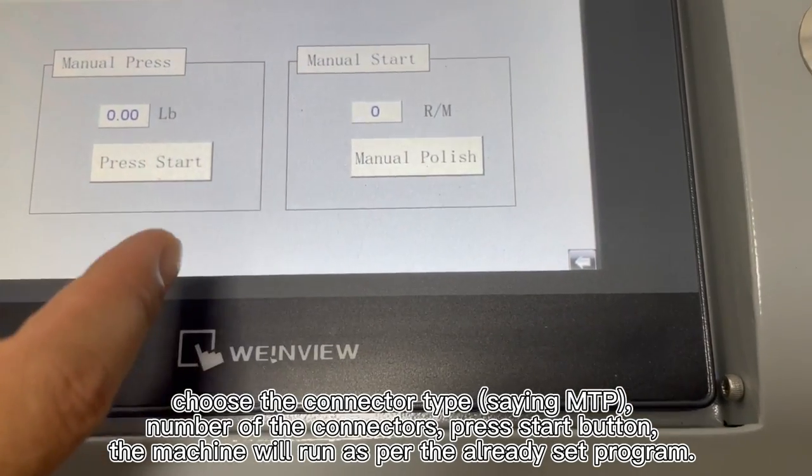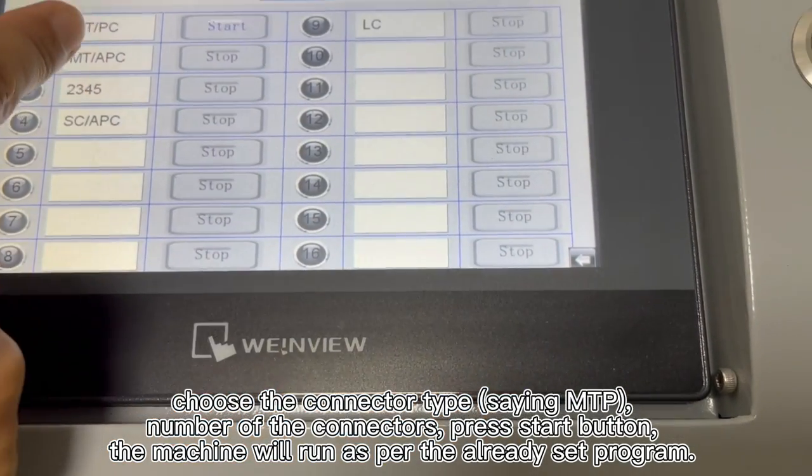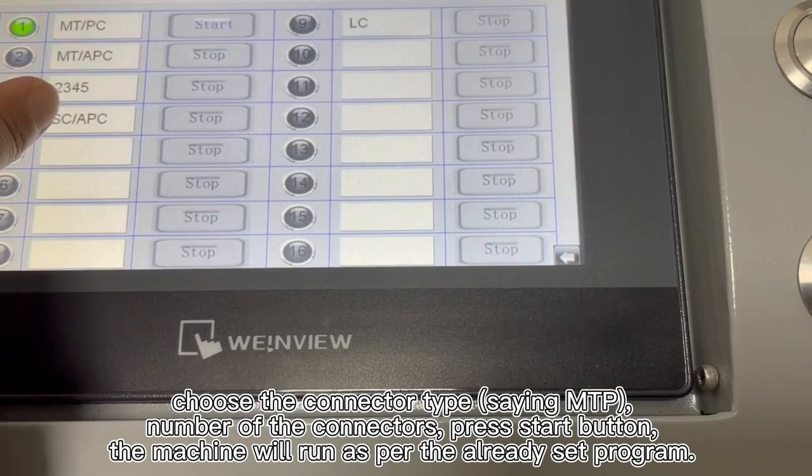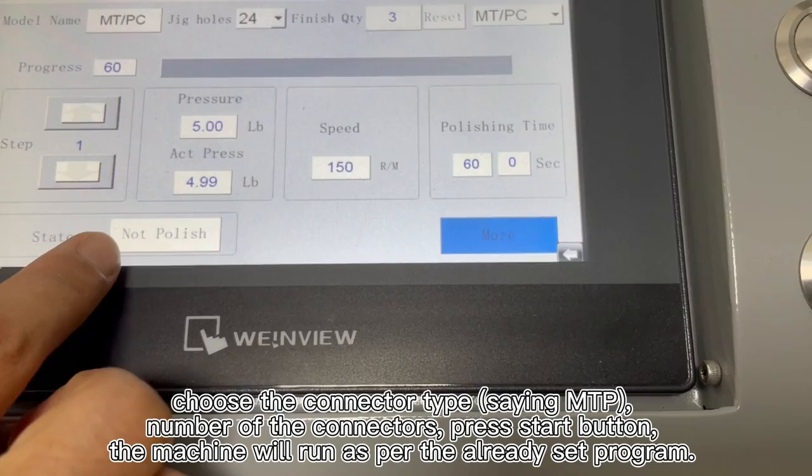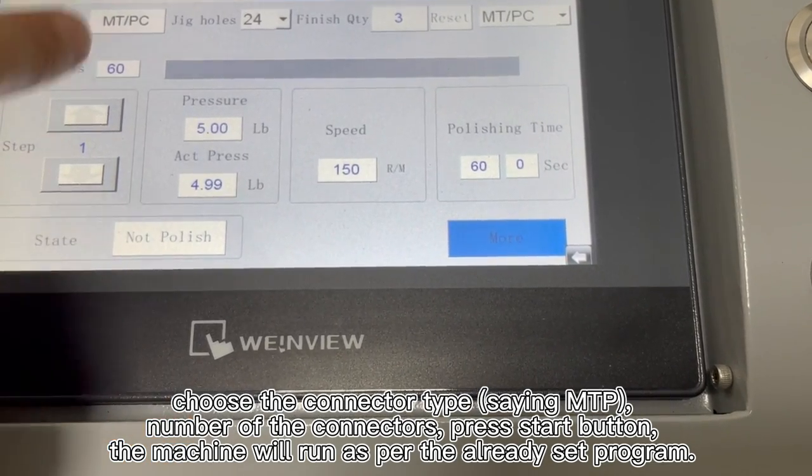And here, this is the manual setting. Normally you won't use it. This is the program for different connectors. You have set different polishing processes. When you press the main, you can see it's no polish.